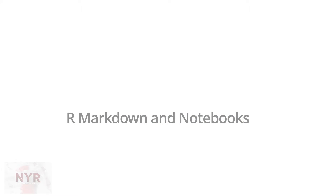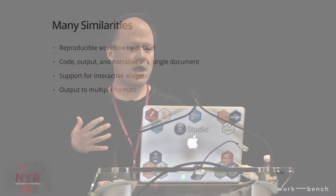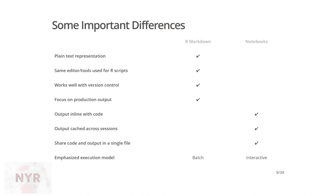R Markdown and notebooks actually have many similarities. They both have a reproducible workflow by default — you can rerun your whole analysis from scratch and get the same result. They mix code, output, and narrative in a single document. They have some way of doing interactive widgets inline, and there's a notion of outputting to different formats — HTML, PDF, or what have you. But there are some important differences.